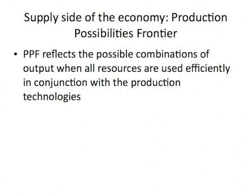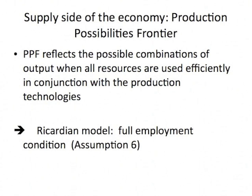We can now turn to the production possibility frontier, or PPF. This is a representation of the supply side of the economy — the various combinations of output possible if all resources are used efficiently. In the Ricardian model, there's a very simple version of this because labor is the only input. Full, efficient use of all resources is simply full employment — it's the full employment condition.